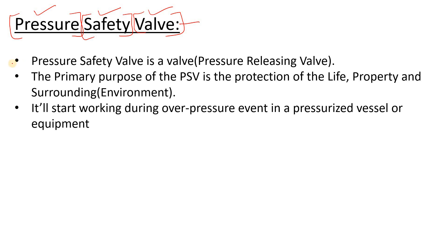A pressure safety valve is a pressure releasing valve — it releases pressure. The primary purpose of the PSV is the protection of life, property, and the surrounding environment. Something problematic is happening within the system, that's why we use the PSV. It starts working during an overpressure event in a pressurized vessel.